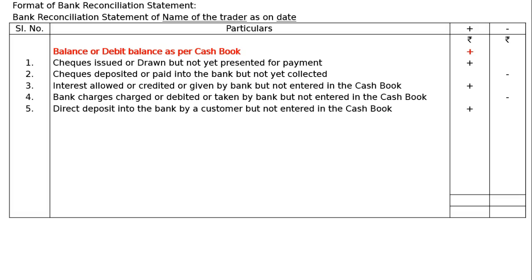Fifth item: direct deposit into the bank by a customer but not entered in the cash book. Some customers or others deposited directly into the trader's bank account and the trader does not know anything about this. Hence he could not record it in the cash book, and the cash book balance was less. We have to add this to find out the correct passbook balance.